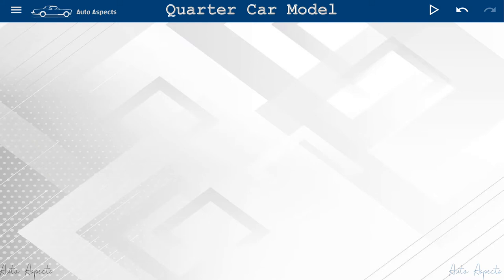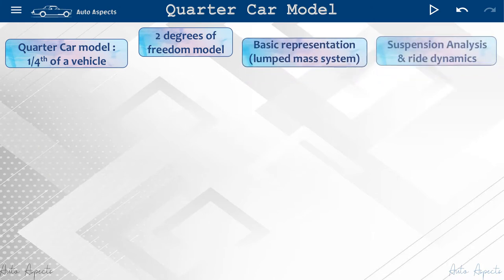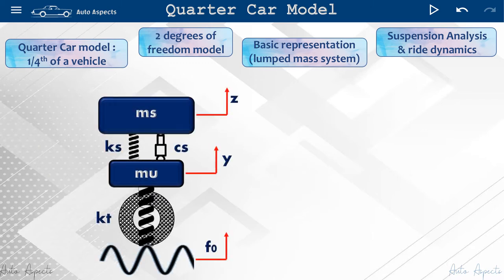A quarter car model is the simplest representation of one fourth of a vehicle, which is a basic two degrees of freedom model, belongs to lumped mass type of system. Which is widely used in suspension analysis and ride dynamics. Here we have represented a typical quarter car model.